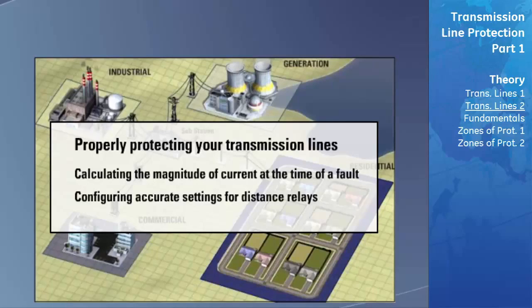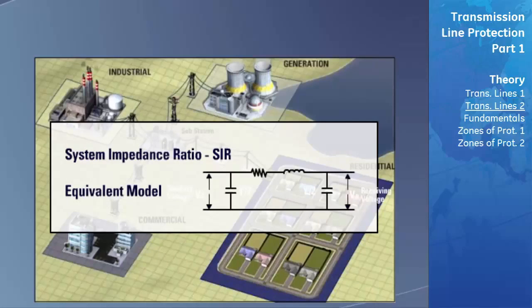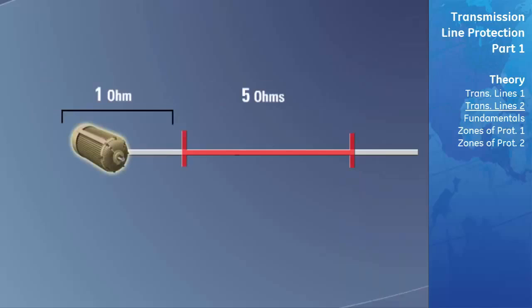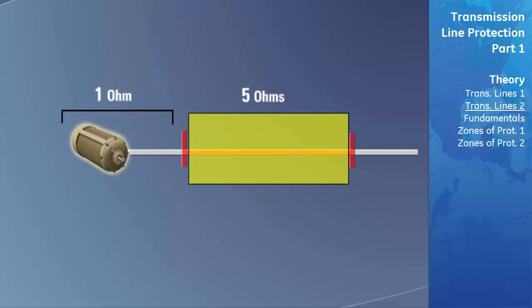In order to properly protect the line, the protection engineer must first calculate the system impedance ratio and develop an equivalent electrical model of the transmission line. The system impedance ratio takes the source impedance of the system behind the transmission line and divides it by the line impedance that is being protected.